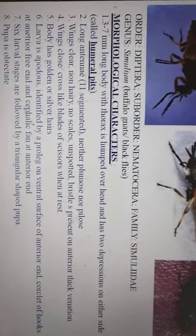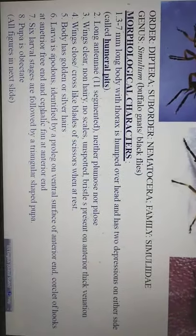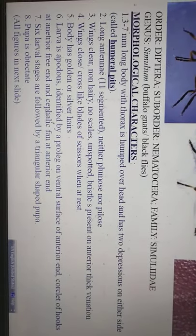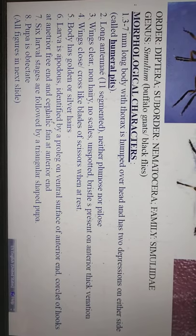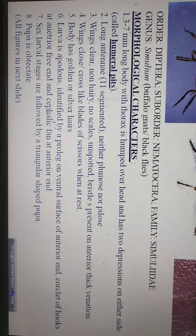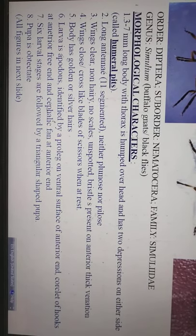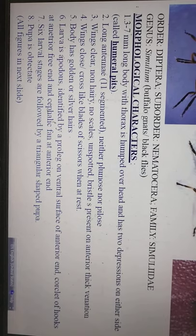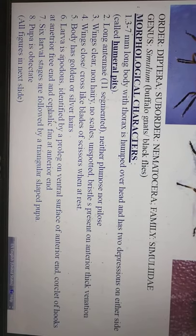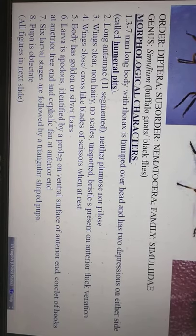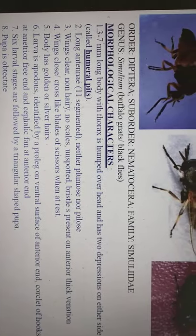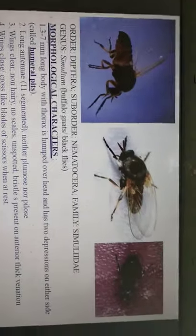First, we will discuss the nematoceran flies. There are four families in Nematocera. The first family is Simuliidae, which consists of the genus Simulium, also called the black flies or buffalo gnats.